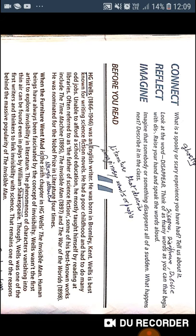Some of his best known works include The Time Machine (1895), The Invisible Man (1897), and The War of the Worlds (1898). He was nominated for the Nobel Prize in Literature four times. 'When the Furniture Went Mad' is the sixth chapter of H.G. Wells's The Invisible Man.